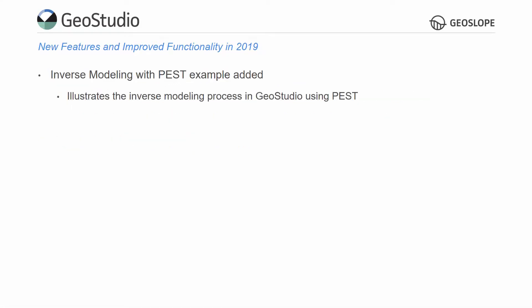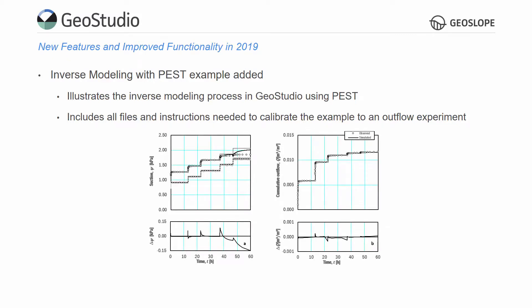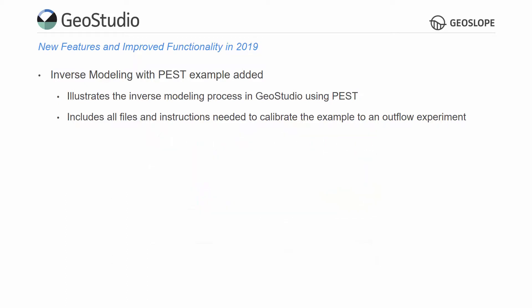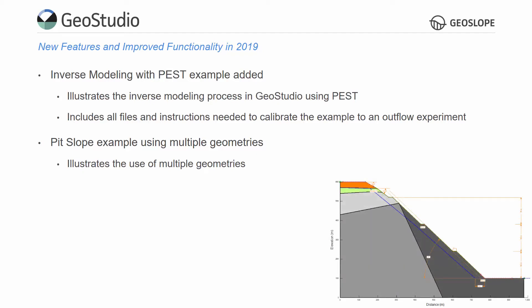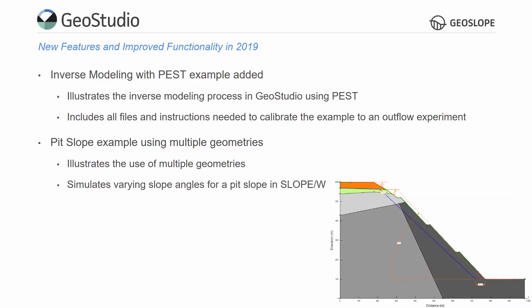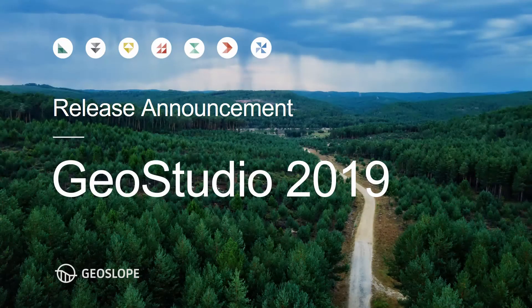Two new examples are now available on the website. The first example illustrates the steps required to conduct inverse modeling in GeoStudio 2019 using PEST executable files. The example considers a multi-step outflow experiment and uses PEST to calibrate the material properties to the outflow results. All files and instructions required to use PEST with the example file are included on the website. The second new example is the PIT slope design with multiple geometries, illustrating the use of multiple geometries across Slope W analyses in a single GeoStudio file. Each geometry represents various slope angles considered for the PIT slope design. Thanks for watching and enjoy using GeoStudio 2019!